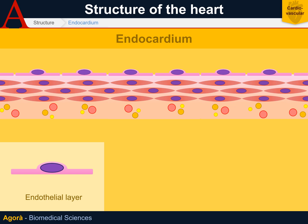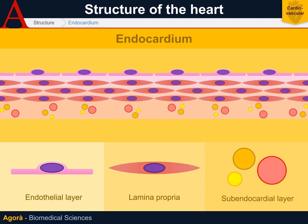The endothelial cells are very thin and the nucleus is the sole bulge on their surface. Then there is a thin layer of smooth muscle cells and a dense connective tissue, that is a lamina propria. Finally, there is a layer of connective tissue called the sub-endocardial layer.